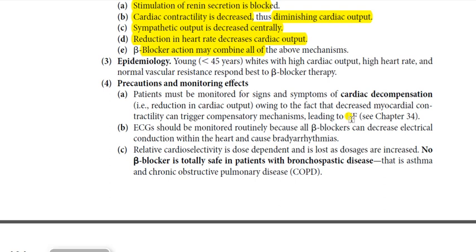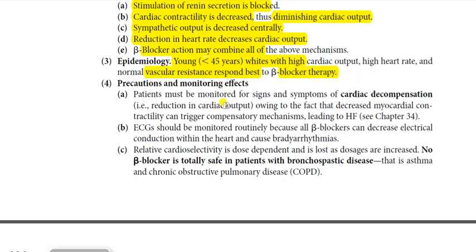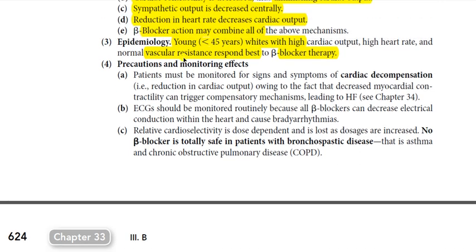Epidemiologically, young patients under 45 years of age, particularly whites, with high cardiac output, high heart rate, and normal vascular resistance respond best to beta blocker therapy. Patients with normal blood vessels and elevated inotropic or chronotropic effects are good candidates for beta blockers.